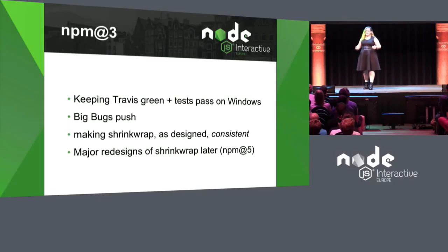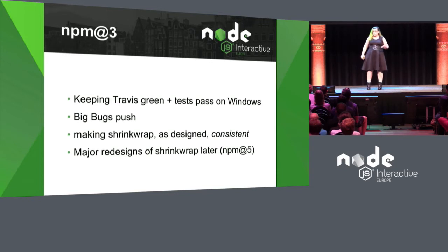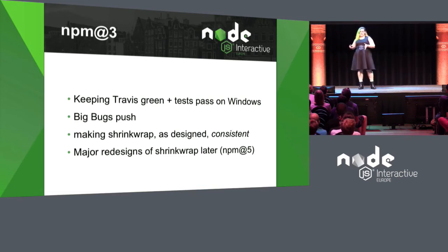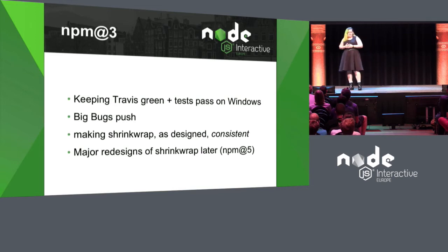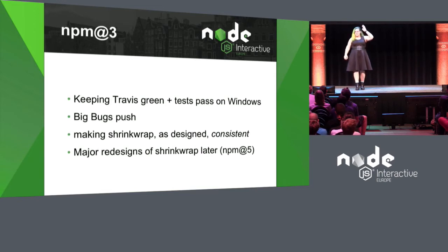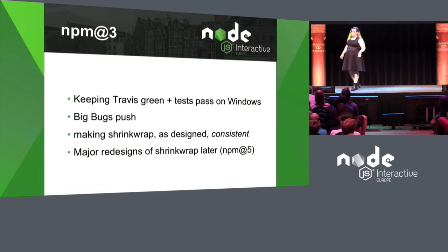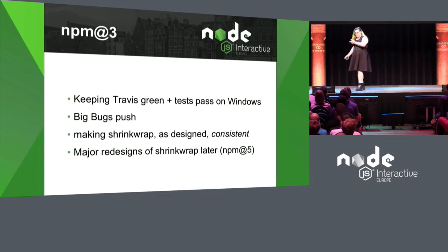We've also been doing a big bugs push for the past few months to iron out gnarly bugs and corner cases. A big bug is any issue that either produces an invalid install or crashes the CLI. These tend to sit in little corner cases because NPM does a lot of things — dependencies, bundles, shrink wrap. Speaking of shrink wrap, we have a really major redesign coming up. That's what NPM 5 is going to be about.